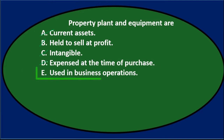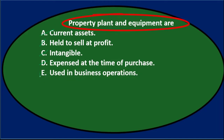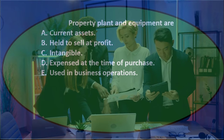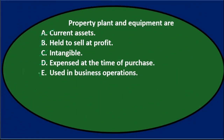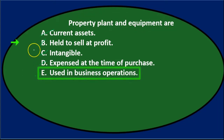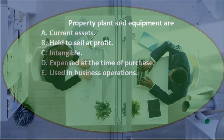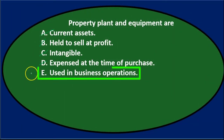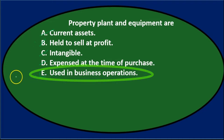So it looks like E must be the answer. E says used in business operations, and that is correct. Property, plant, and equipment are E, used in business operations. Note that's a major difference if we were trying to problem-solve between E and B — held for profit. Those are two types of reasons we could be holding property, plant, and equipment, and we might narrow it down between those two: either it's held for profit or it's held to be used in the business to help generate revenue.